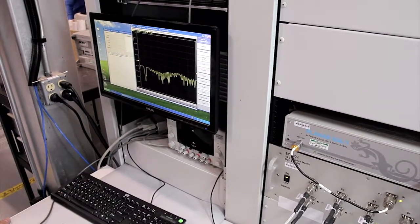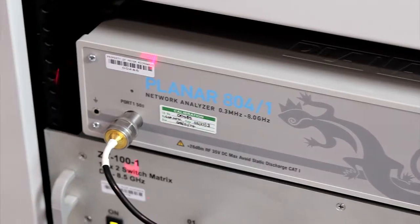Of course the price is everything and the Copper Mountain network analyzer is significantly cheaper than its counterparts to the tune of about a third to half the price.